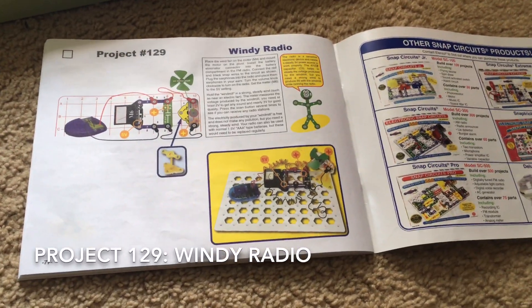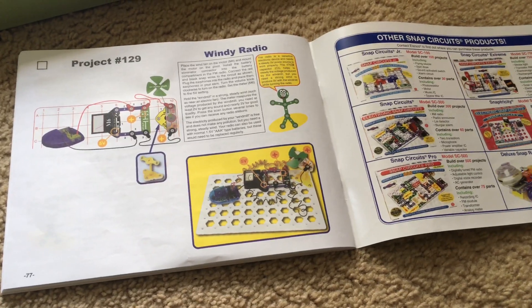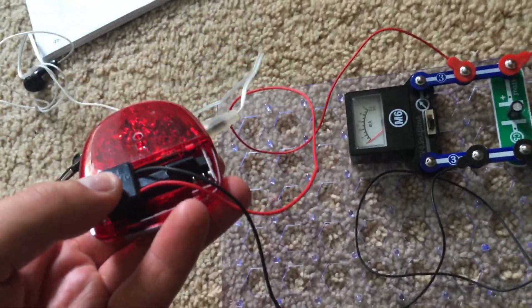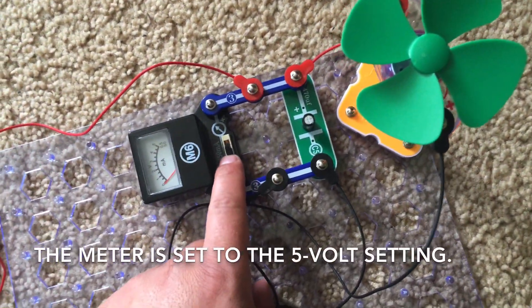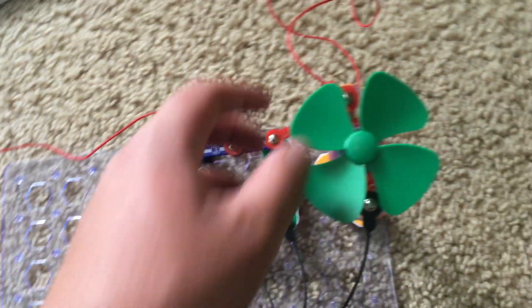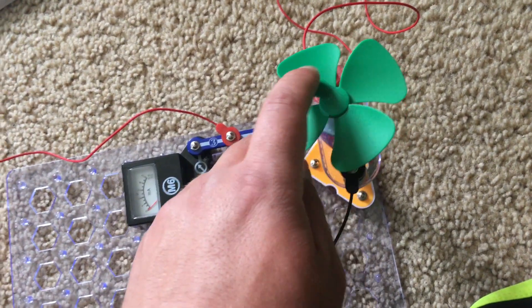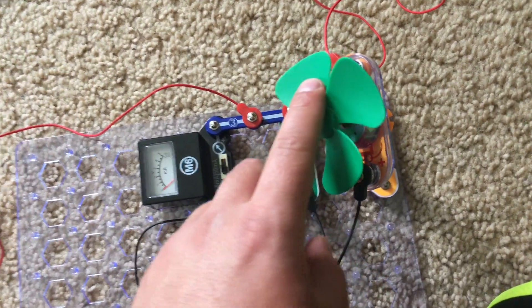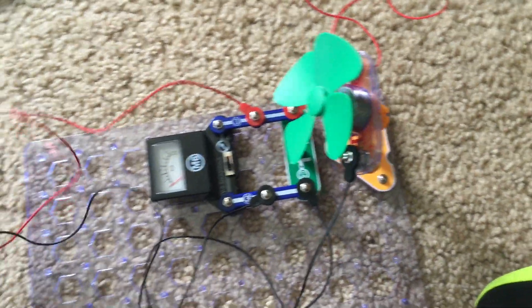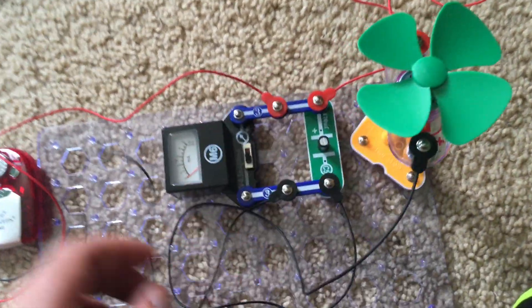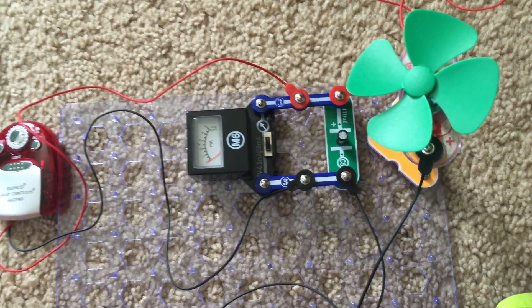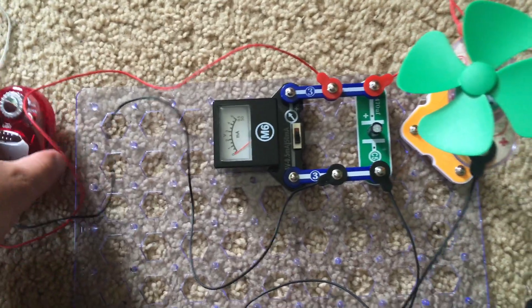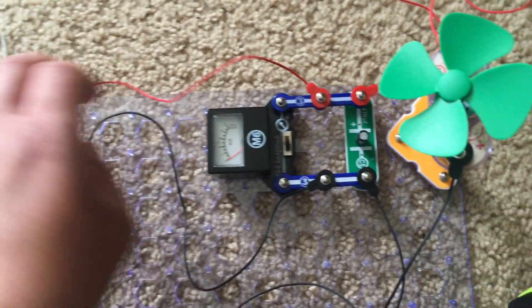The final project of Snap Circuits Green is windy radio. You will need the radio with the battery eliminator and headphones, and the voltage meter will be set on the 5 volt setting. You will use the windmill and spin it counterclockwise to try to produce power to power the radio. You could also put it in a strong wind. You will need a voltage of at least 2 volts for the radio to work, and you will need close to 3 volts for enhanced sound quality.